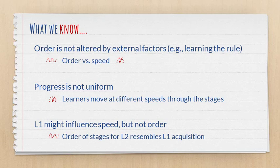As for the influence of the first language, or any other languages the learner may already know, the consensus appears to be that it might influence speed but not order. Some learners may pass through the stages very quickly thanks to their first language, but the order is still the same — scholars maintain this because research has shown that learners of different first languages appear to progress through the same stages regardless of their first language.